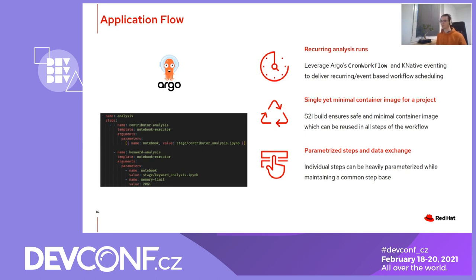We have a single, minimal, secure, and versioned container image per project. We can manage this deployment in a Kubernetes way, so we can roll back to previous releases. For workflow steps, we use a command base, but each step can be parameterized — so we can scale memory-intensive tasks, for example — and other parameterization is available.